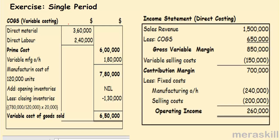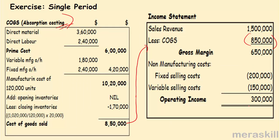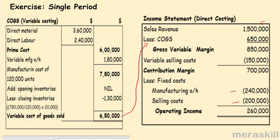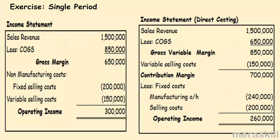Under variable costing, sales is 1.5 million but you had only 650,000 gross variable margin — so gross variable margin is 850,000. Then you reduce the variable selling costs to arrive at 700,000, which is the contribution, because sales less all variable costs gives you the contribution. Then you reduce the fixed cost of 240,000 and 200,000 and therefore you get 260,000. What was your profit in the previous example? It was 300,000. What is the profit here? It is 260,000. The difference is 40,000.